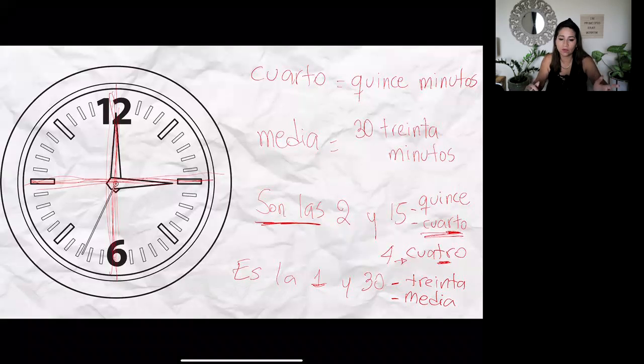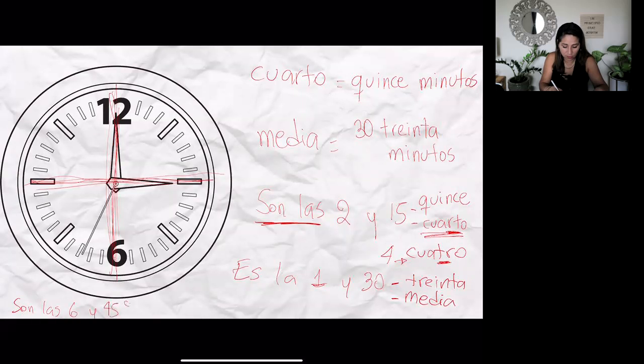Now if it's a quarter till a certain time, so like let's say it's a quarter to seven, so that would be six forty-five. I could say it's six forty-five if I know how to say forty-five in Spanish, which I'll give you the word here. I could say son las seis y cuarenta y cinco, or I could also say it's a quarter to seven, so es un cuarto para las siete. Okay, that's another way.